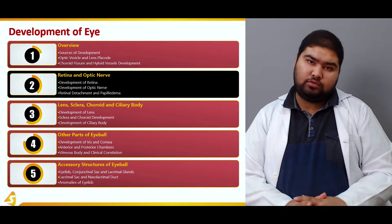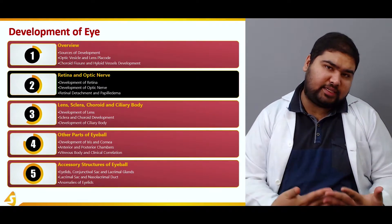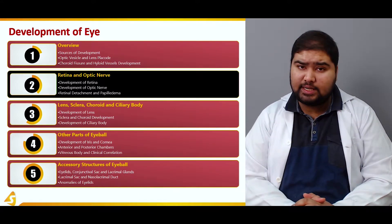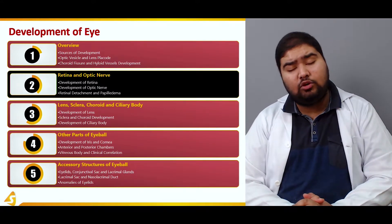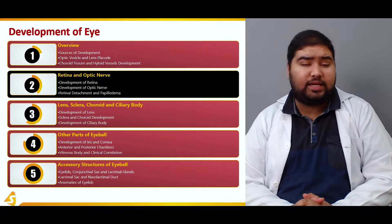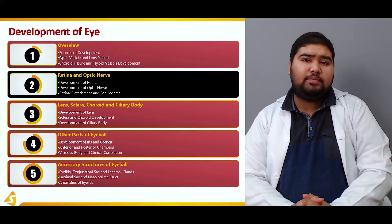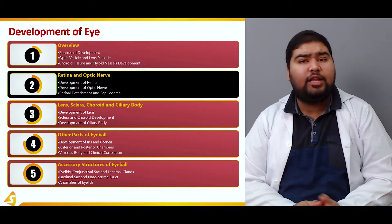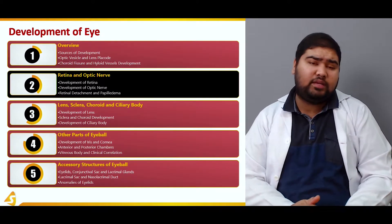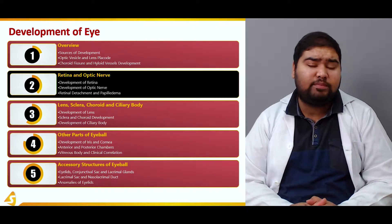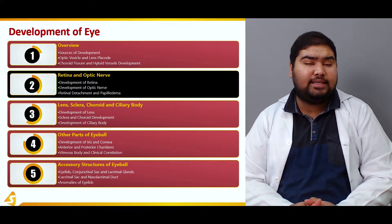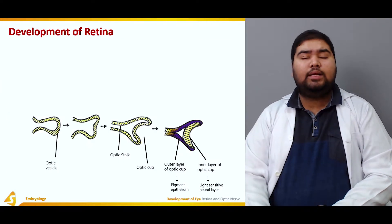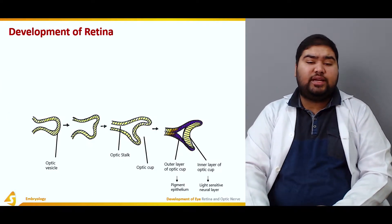This section has been divided into the development of retina, in which we will see what are the various components that help in its development. Then we will talk about the development of the optic nerve and the parts that help in its formation. Then we will see various clinical correlates as to what happens when the developmental process does not go as planned, and we will talk about retinal detachment and papilledema. So let's talk about development of retina first.